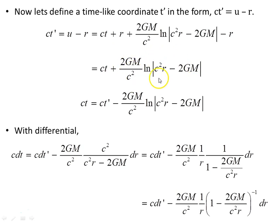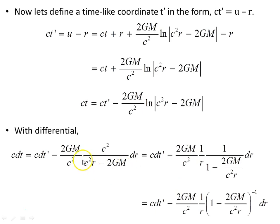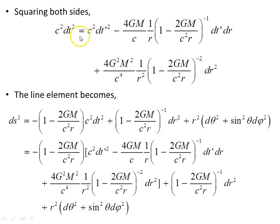Taking the differential, c dt equals c dt-prime minus this object, dr. After canceling c-squares and factorising, we get c dt-prime minus 2GM/c², times 1/r, pulling out the factor 1/r. Squaring both sides gives c² dt² equal to c² dt-prime² minus this object plus this object — which will be substituted into the Schwarzschild metric.